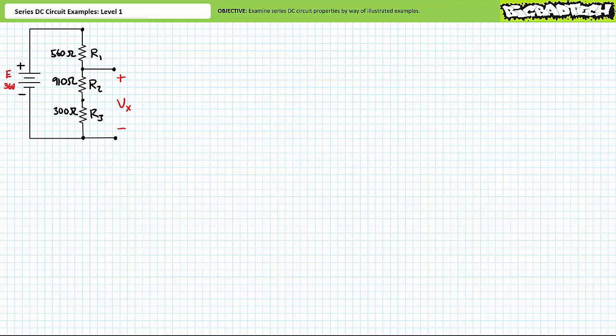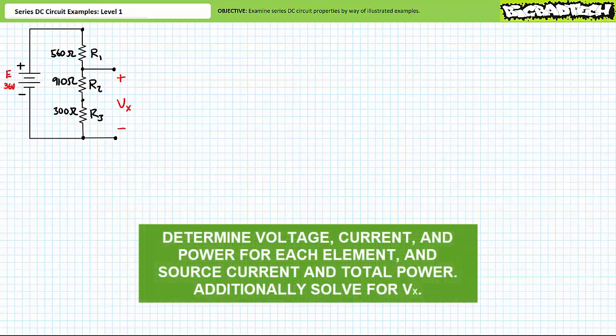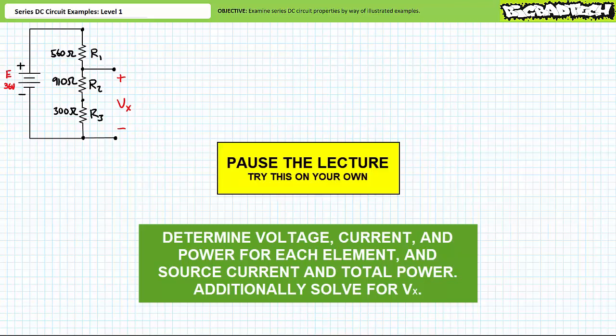Our first illustrated example features a 36 volt source in series with a 560 ohm resistor, a 910 ohm resistor, and a 300 ohm resistor. We're being asked to solve for the voltage drop across each element, the current through each element, the power dissipated by each element, the source current, and the total power. Additionally, we're being asked to solve for unknown voltage Vx with the indicated polarity. By all means pause the lecture and try this on your own. Present all answers in proper engineering format rounded to the tenth place. If you're tracking, you should have obtained the following results.